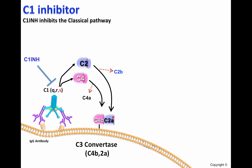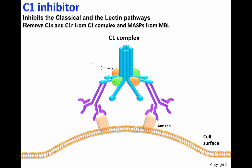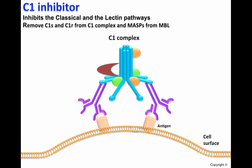C1 inhibitor inhibits C1, therefore the activation of the classical pathway is inhibited. Basically, C1 inhibitor will recognize C1R and C1S, and it will remove them from the C1 complex. This means C1Q by itself can no longer activate the classical pathway.